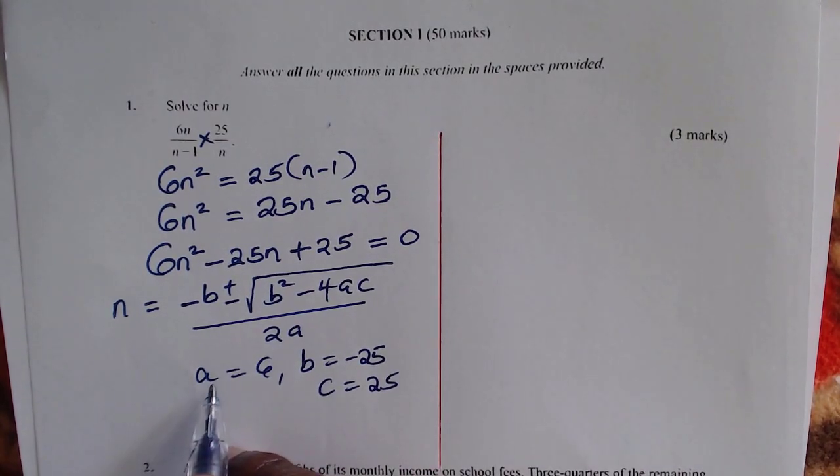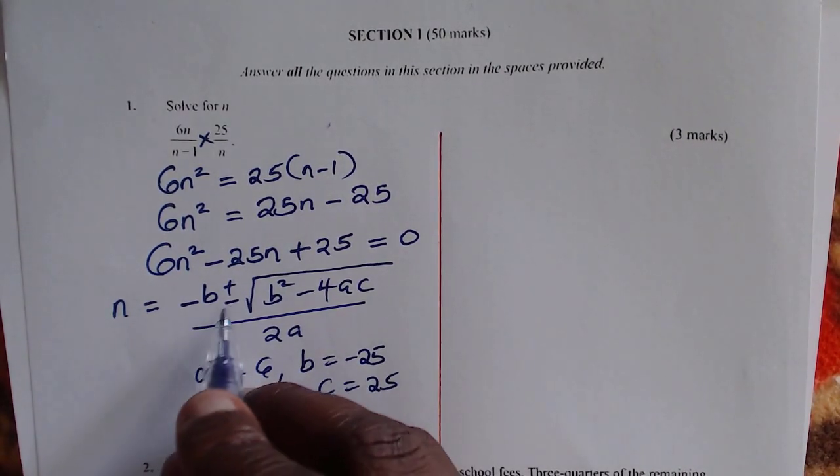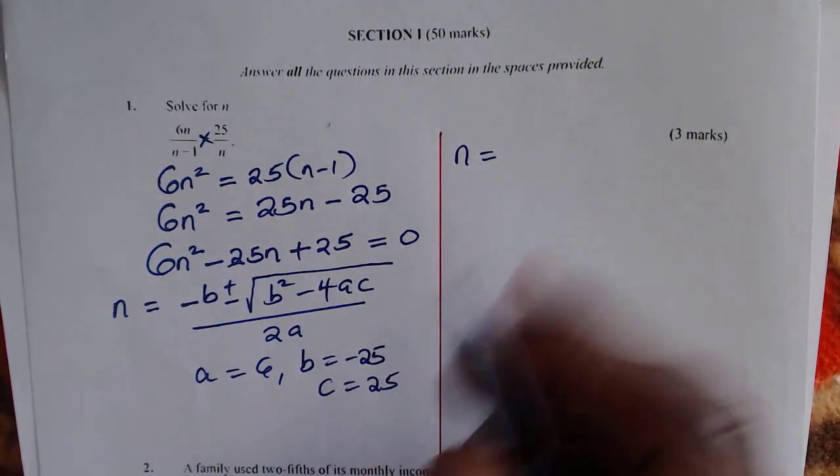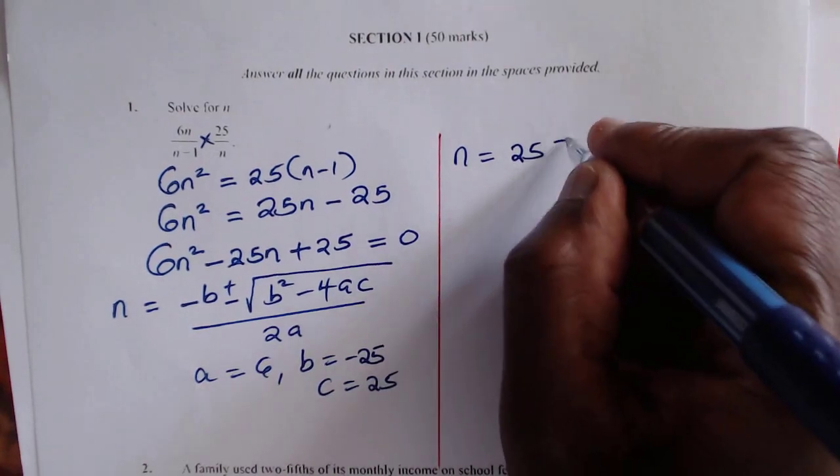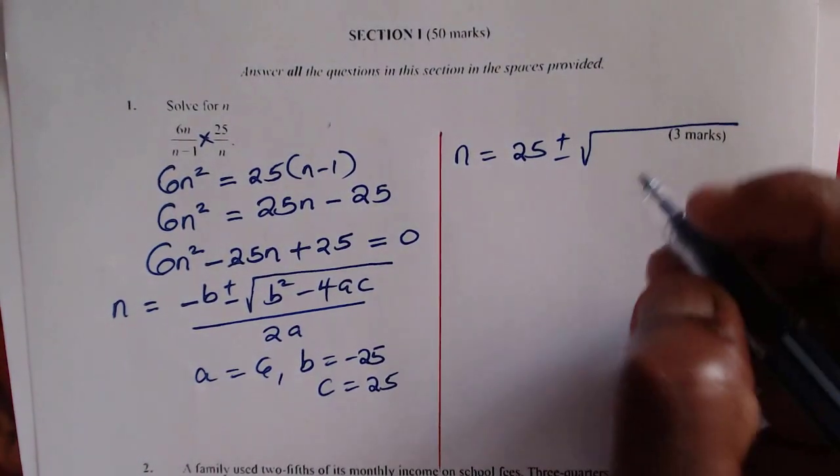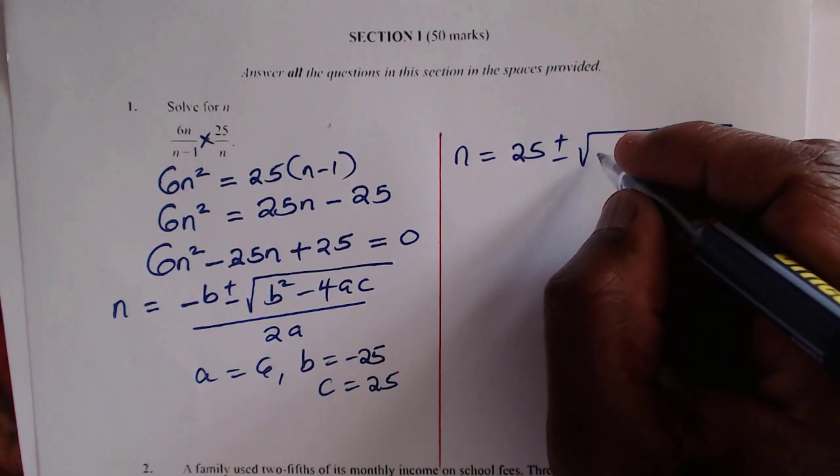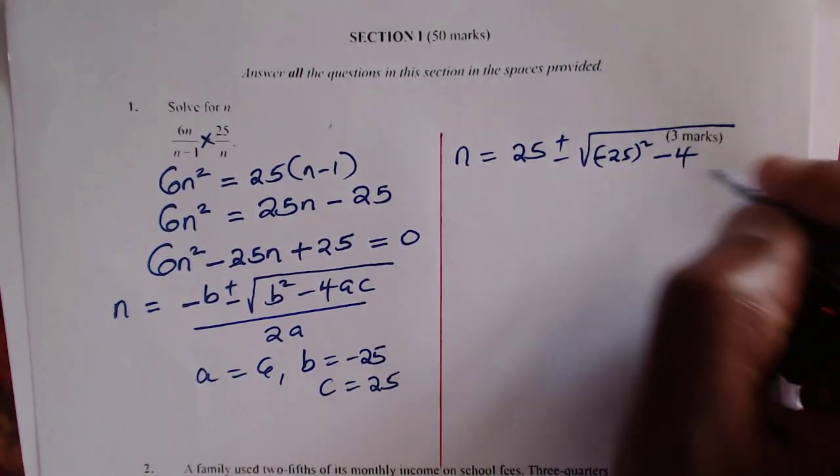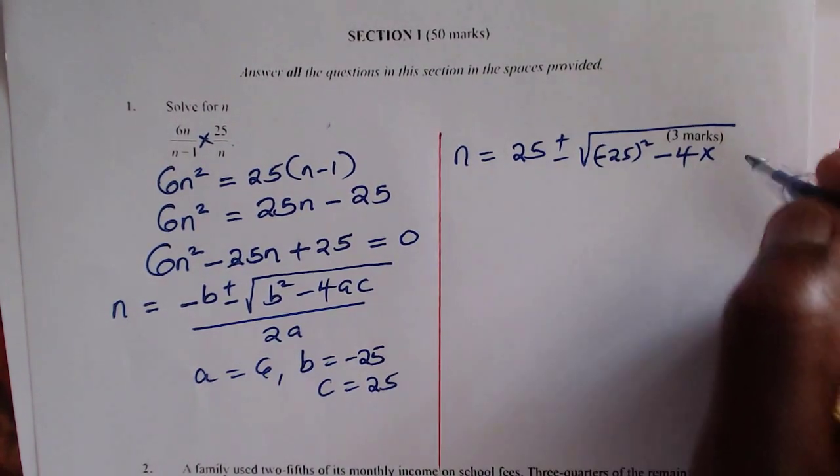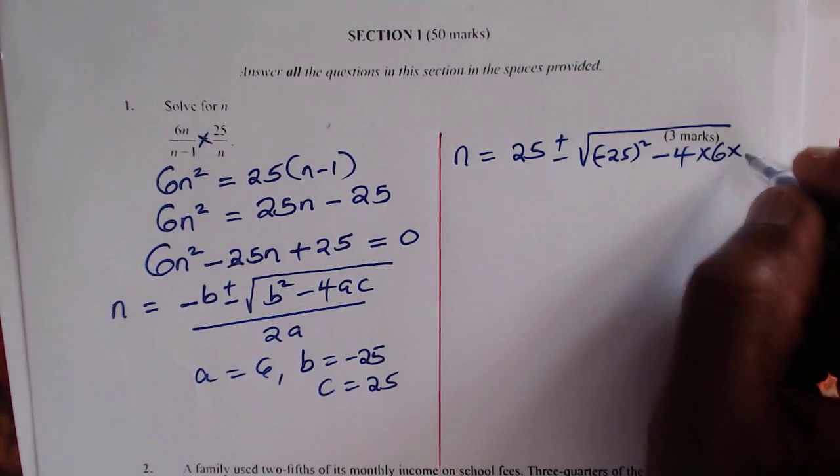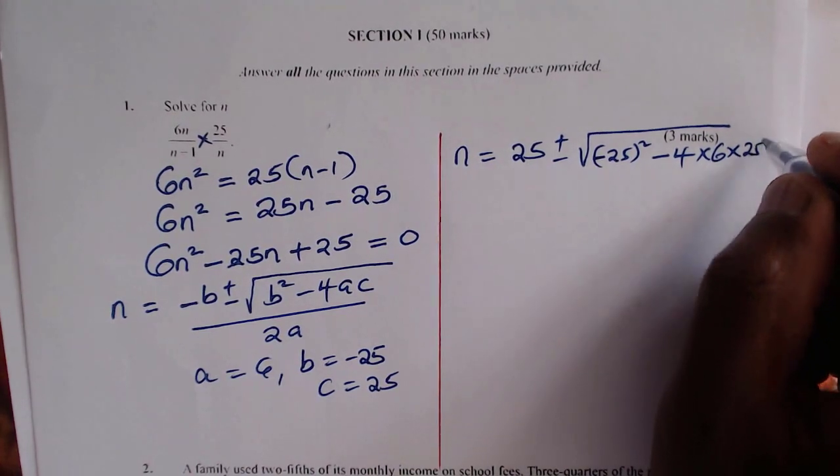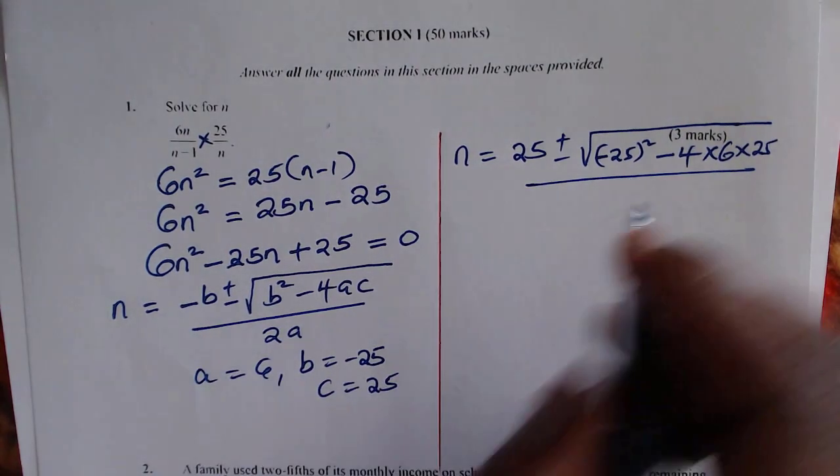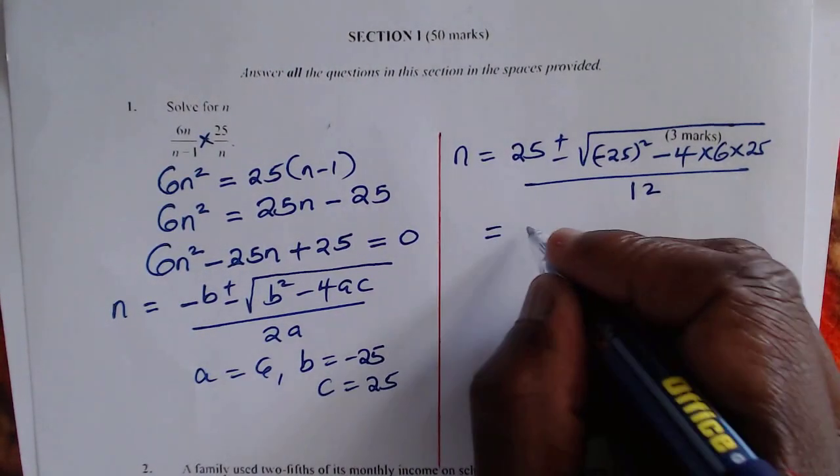Now substitute these values a, b, and c in this formula. So you get n will be given by negative b, this will be 25 plus or minus, then the square root, this will be b squared, b negative 25 squared minus 4 times a, a is 6, times c, which is 25. Everything divided by 2a, 2 times a, a is 6, that will give 12.